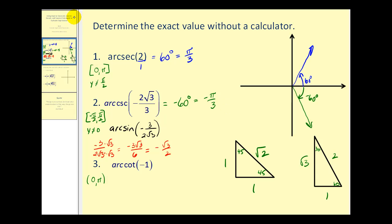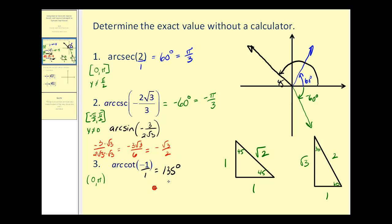Number three: we have arc cotangent of negative one, so I'm going to change this to negative one over one. We want an angle that has a cotangent function value of negative one over one. Looking at our reference triangles, a 45-degree angle has a cotangent ratio of one — adjacent over opposite — so our reference angle will be 45 degrees. Since the function value is negative, in this interval we're going to be in the second quadrant. Sketching a 45-degree reference angle in the second quadrant tells us the actual angle we're looking for is 135 degrees, which would be three pi over four radians.